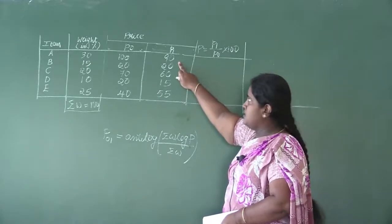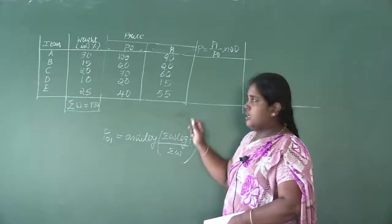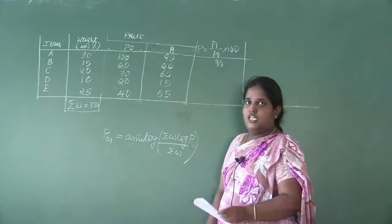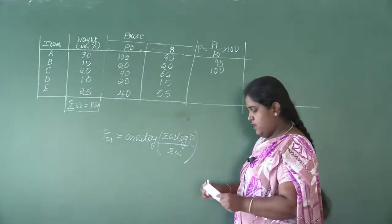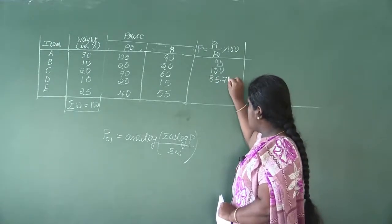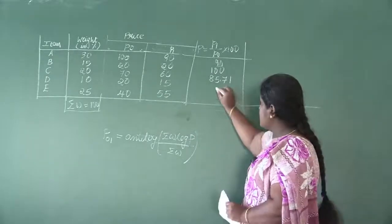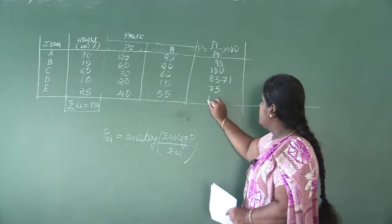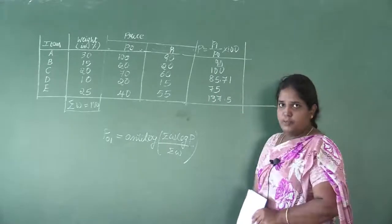Now we calculate the price relative P for each item. For the first item: 90 divided by 100 into 100 gives 90. Next: 20 divided by 20 into 100 gives 100. Then: 60 divided by 70 into 100 gives 85.71. Next: 15 divided by 20 into 100 gives 75. Last: 55 divided by 40 into 100 gives 137.5.